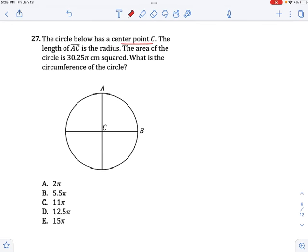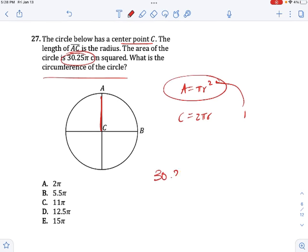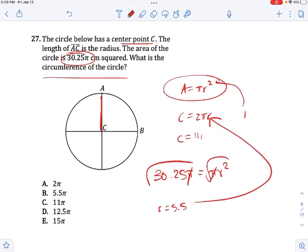Circle below has a center point C. The length of AC is the radius. The area of the circle is this. So what does the circumference? Remember the two formulas: Area equals pi r squared and circumference equals 2 pi r. If you know one, then you know the other. And in this case, we know the area. 30.25 pi equals pi r squared. Divide both sides by pi. Take the square root. You get r equals 5.5. Plug that in here. You get circumference equals 11 pi. As long as you remember these two formulas, you will be good on any circumference or area problem.